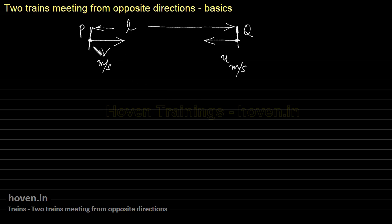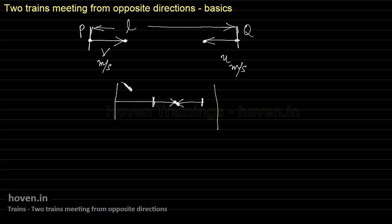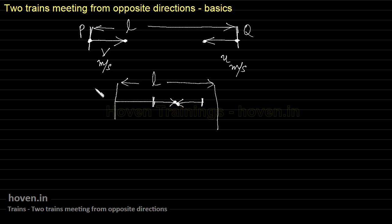When the two trains meet, the distance between the heads of the two trains will be zero — that is what you should appreciate. One train will be at this position and the other at this position, their heads touching each other. Initially, the distance between the heads of the two trains is L, since the trains start at the two stations which are L apart.